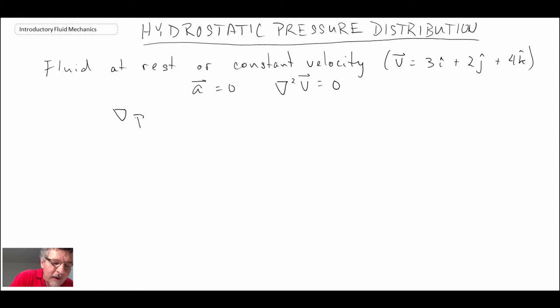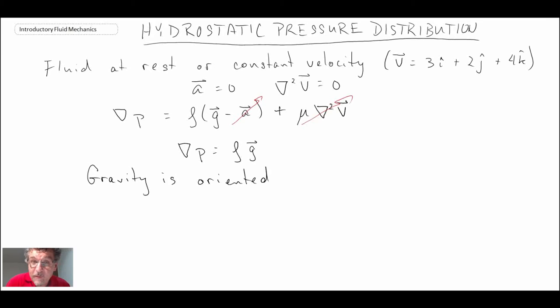Consequently, the equation that we had for a fluid, with this, the acceleration term goes away, that goes away, and we're left with the special case where the gradient of pressure is just the density times the gravity vector. Now, typically, gravity is oriented down unless you're doing space fluid mechanics.